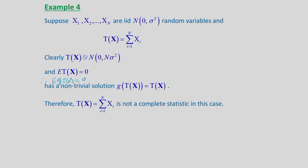Another example: X1, X2, ..., Xn are IID N(0, sigma^2) and T(X) = sum Xi, i = 1 to n. Since T(X) is a sum of zero-mean variables, T(X) ~ N(0, n*sigma^2), and E[T(X)] = 0. Therefore, if we set G(T(X)) = T(X), then E[G(T(X))] = 0 is satisfied with a non-trivial function. Hence T(X) = sum Xi is not a complete statistic in this case.